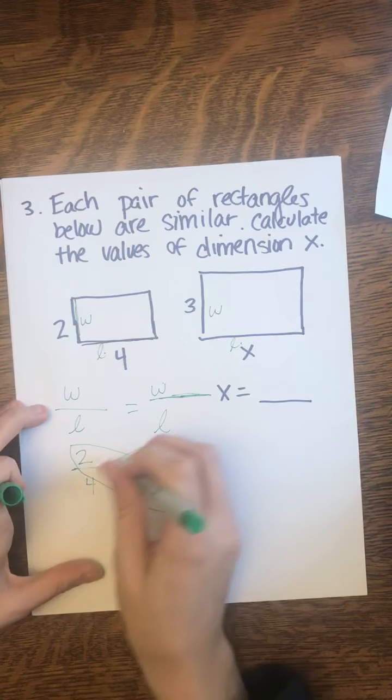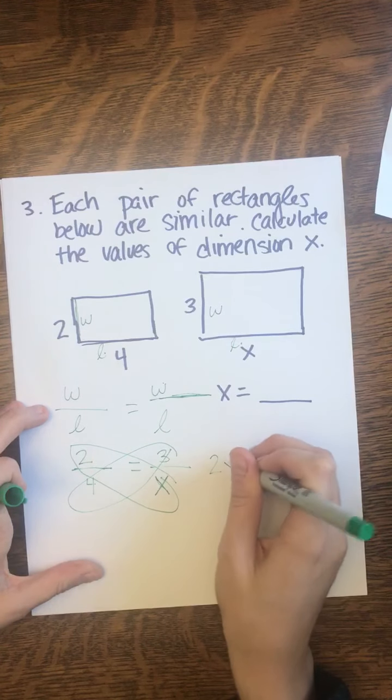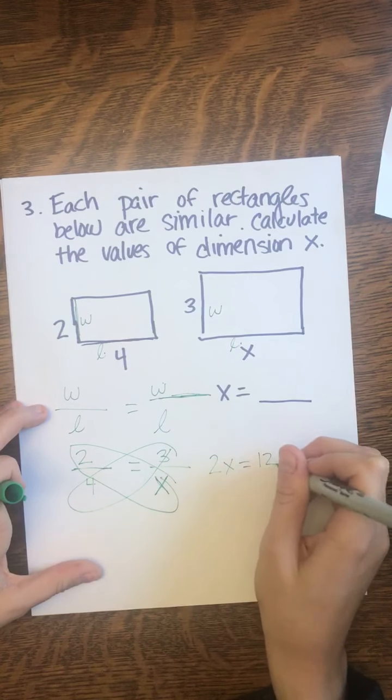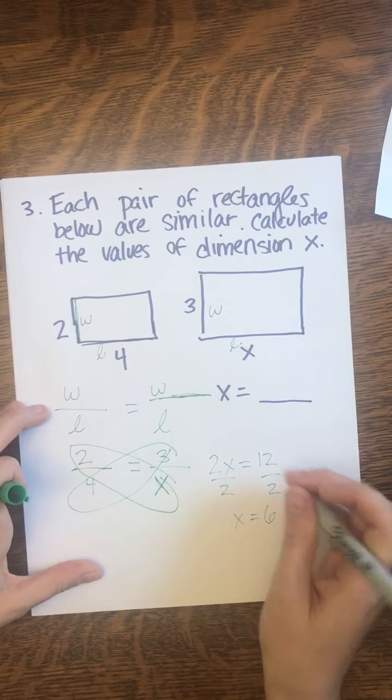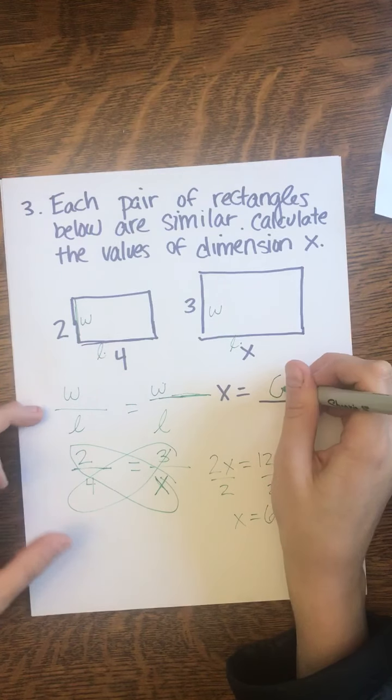And in this case, it's really easy just to cross multiply and divide. We can butterfly it. 2 times X is 2X. 3 times 4 is 12. And then divide by 2, divide by 2, and X equals 6. So we would get X equal to 6.